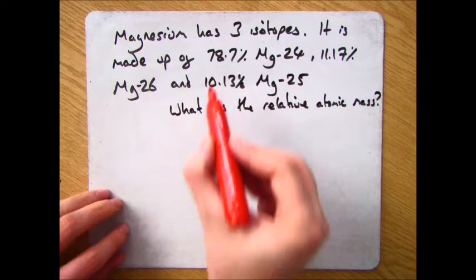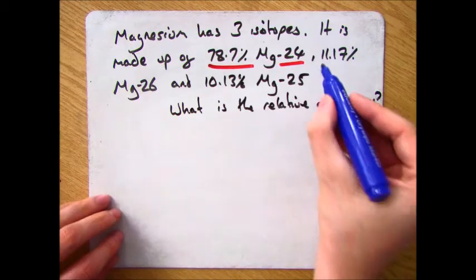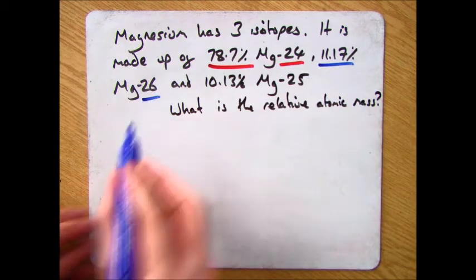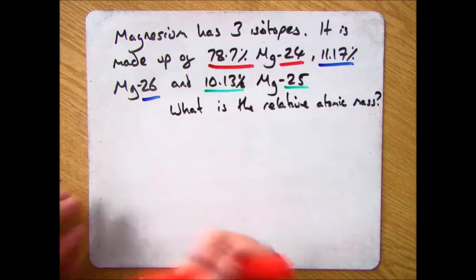Okay let's see how you did. So what you want to do here is find the percentage and the mass of every single isotope. So we have 78.7 of 24, 11.17 of 26 and 10.13 of 25.